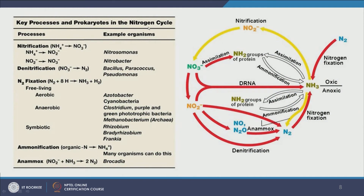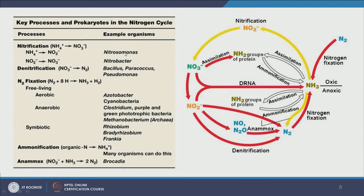Now let us go to the nitrogen cycle. The key processes are nitrification, denitrification, nitrogen fixation, ammonification, and anammox. Nitrification means going to higher oxidized states of nitrogen — from ammonia to nitrite, and nitrite to nitrate — carried out by microbes such as Nitrosomonas and Nitrobacter. Denitrification is reduction of nitrogen, going from nitrate to nitrogen gas, performed by Pseudomonas, Paracoccus, and Bacillus.